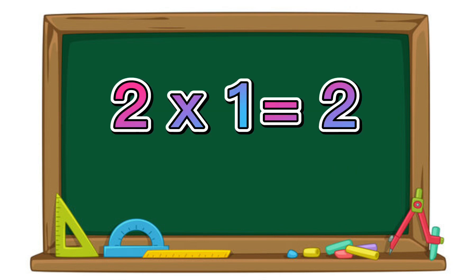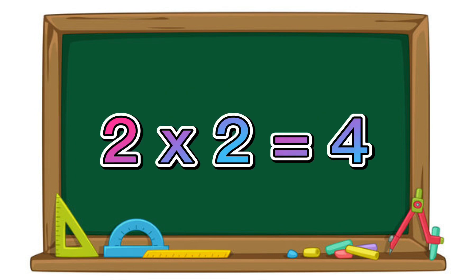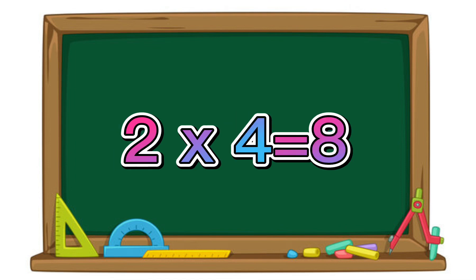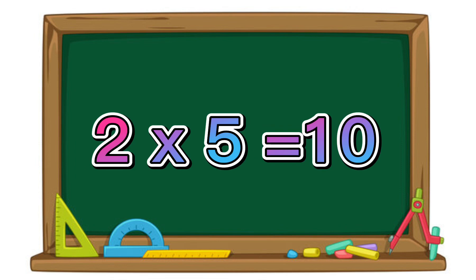2 times 1 equals 2. 2 times 2 equals 4. 2 times 3 equals 6. 2 times 4 equals 8. 2 times 5 equals 10.